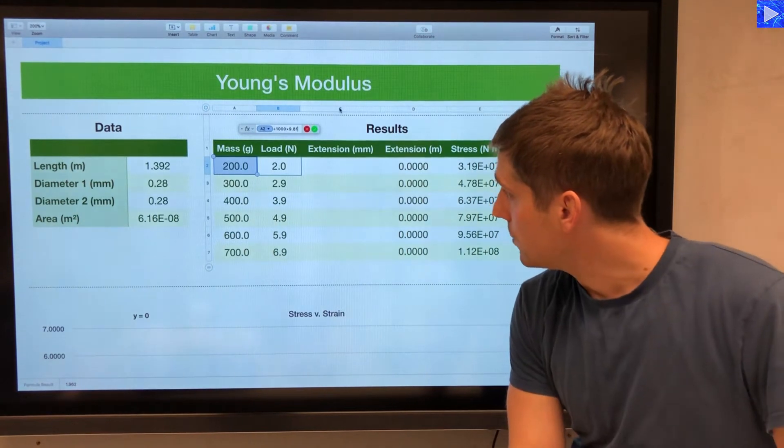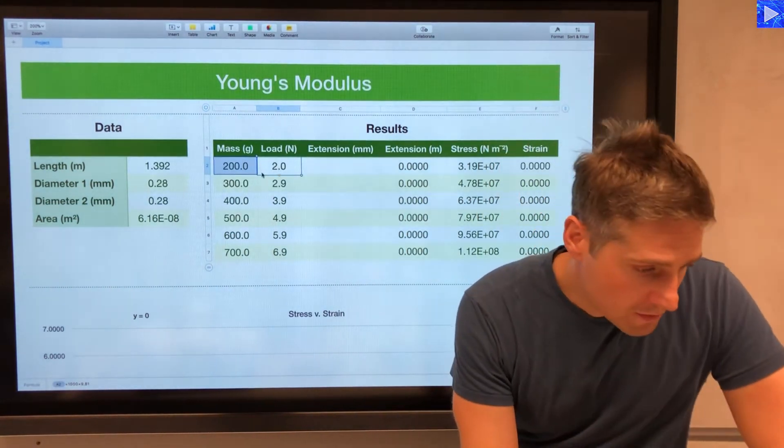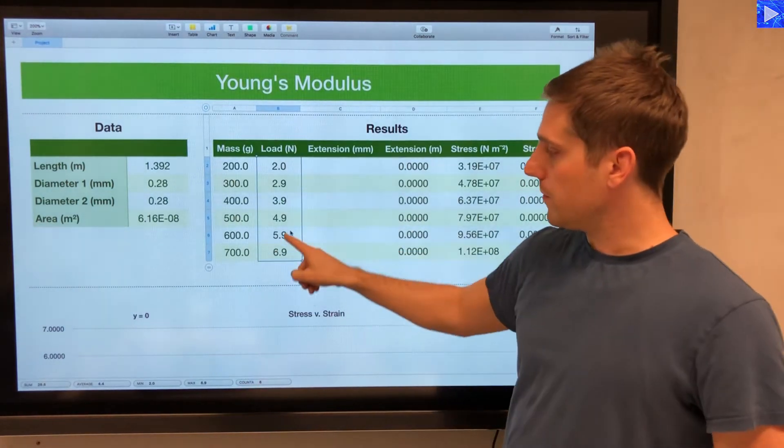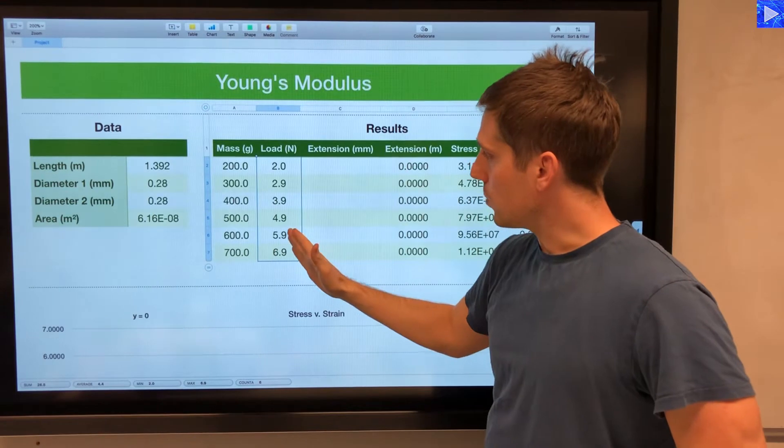And then all I do, once I've accepted that formula, is fill that down, like that, and it gives me all the load values here, in newtons. So that's the second column there.